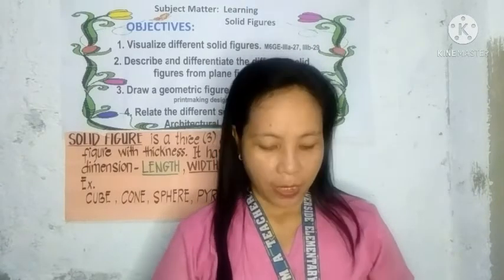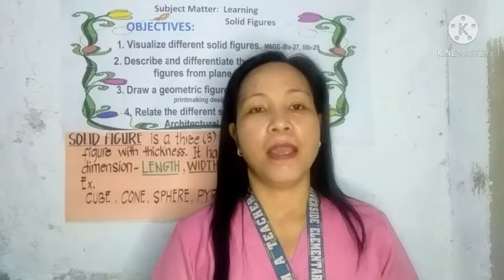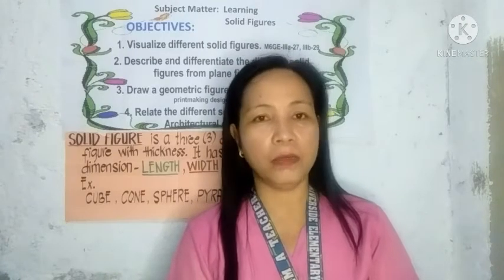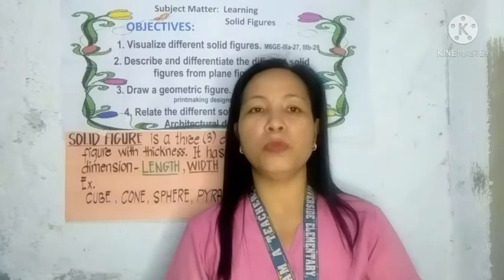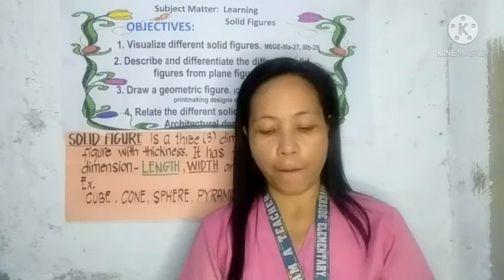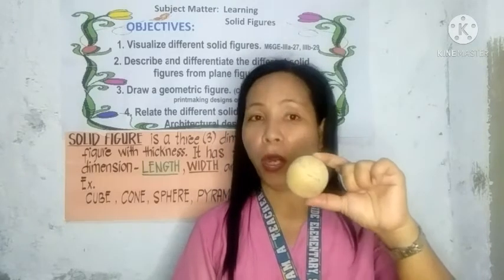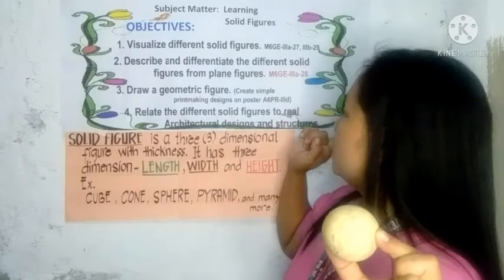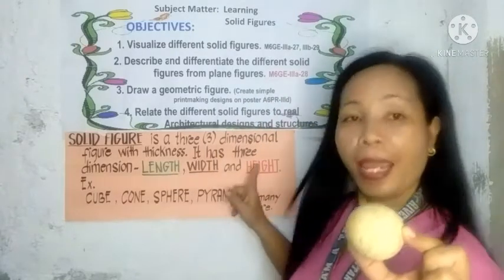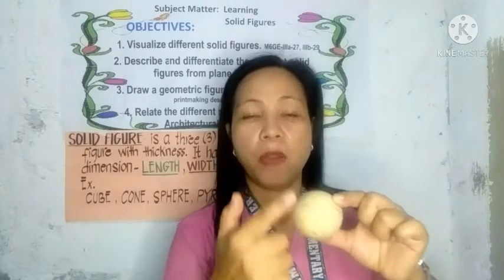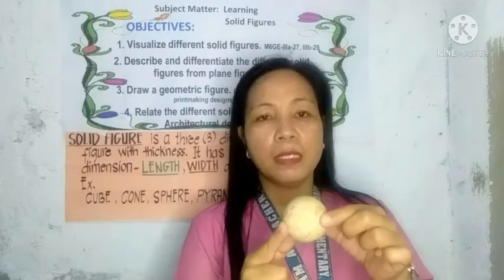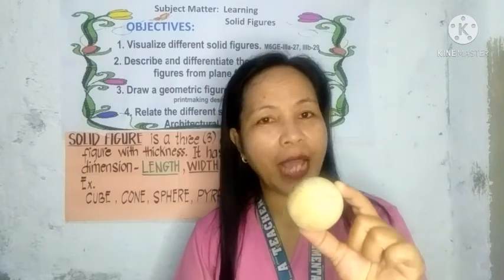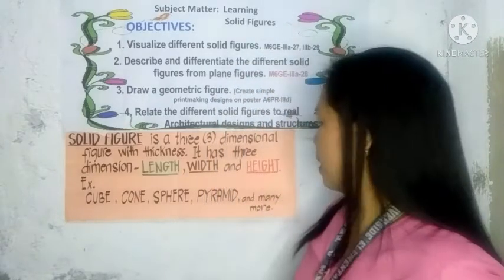What is a sphere? Anything that is round — like a ball, a globe, or a balloon — is an example of a sphere. Here is a wooden ball as an example. Take note: a sphere has no length, width, or height because the shape is round. You cannot find those dimensions in this solid figure. This is a sphere.